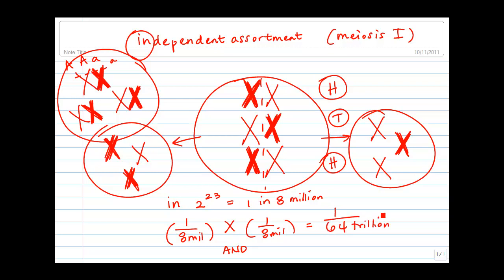So just because of independent assortment alone, it is no wonder that you are you and you only.